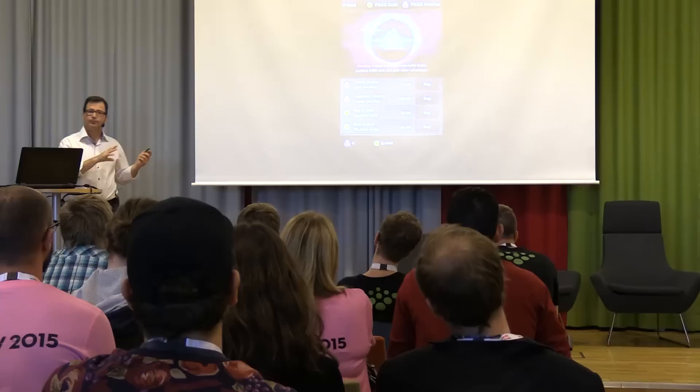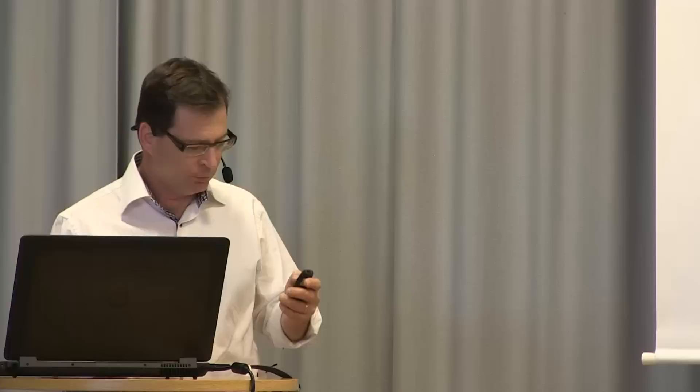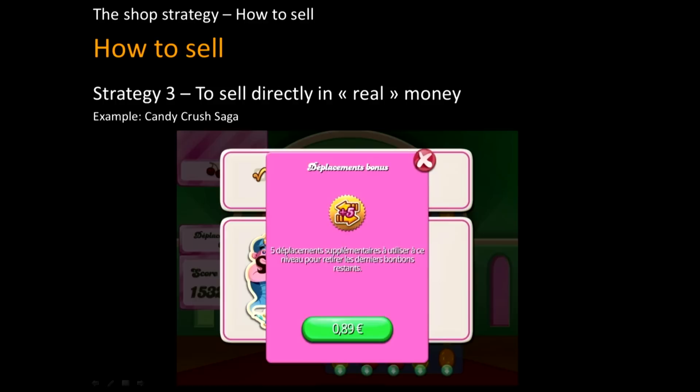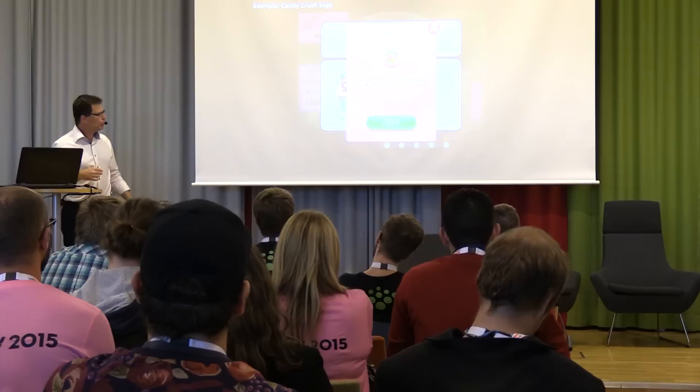And the third technique, which is very rare, is to sell items directly in real money. This is what Candy Crush used to do — you could buy extra lives directly in euros. I think they gave up this system, and I'm not sure many games do that anymore. But it's an option, especially if you are targeting super casual players.